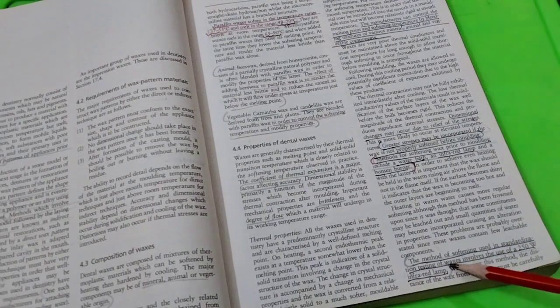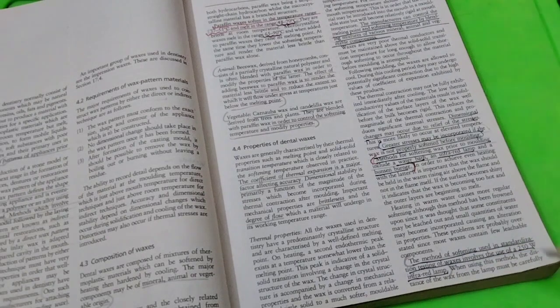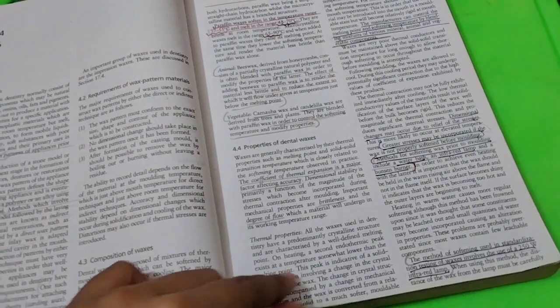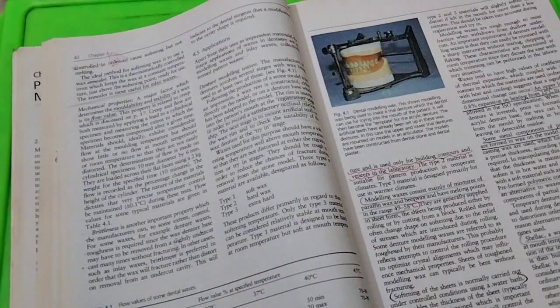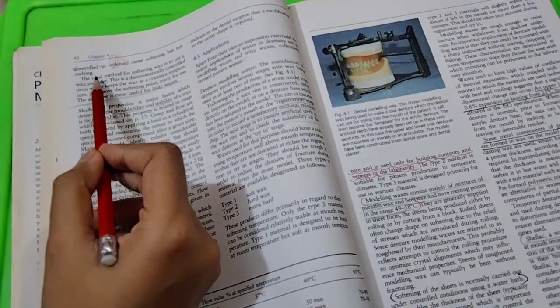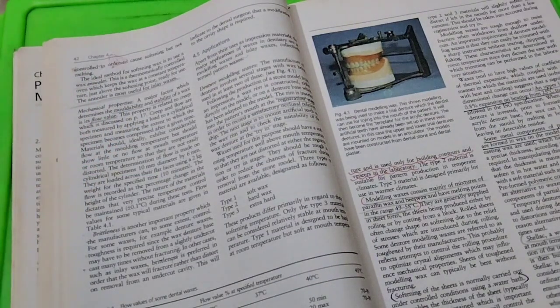The method to heat waxes involves the use of 250 watt infrared lamp. So you mark this line as an MCQ - you will be asked about 250 watt infrared lamp for different types of waxes. One more MCQ comes from here: the ideal method for softening wax is wax spatula heated in flame.